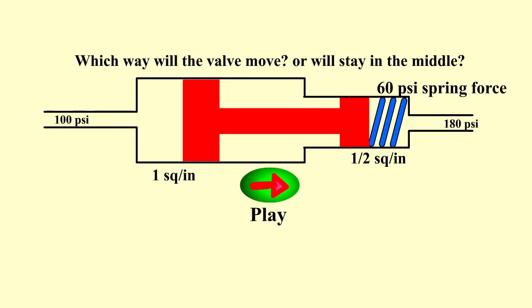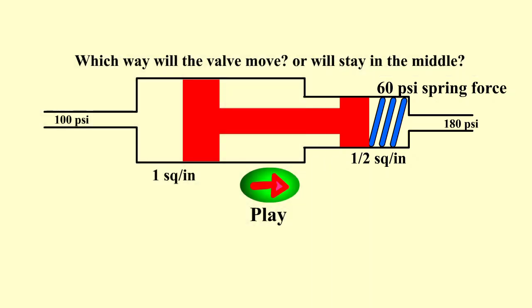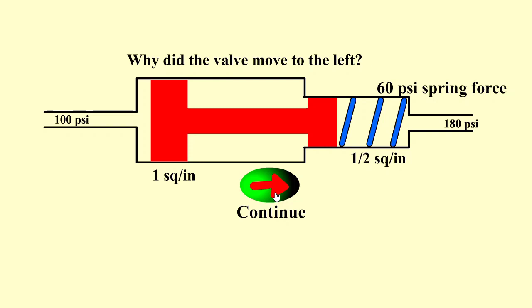Let's now look at another scenario. In this scenario a spring has been added to the right hand side, and that spring is capable of putting 60 pounds per square inch of force on that half inch surface area. Now which way will the valve move — to the right again, to the left, or stay in the middle? If we test it we'll now see that it moves to the left, because the force on the right hand side of the spool valve is now greater than the force on the left hand side.